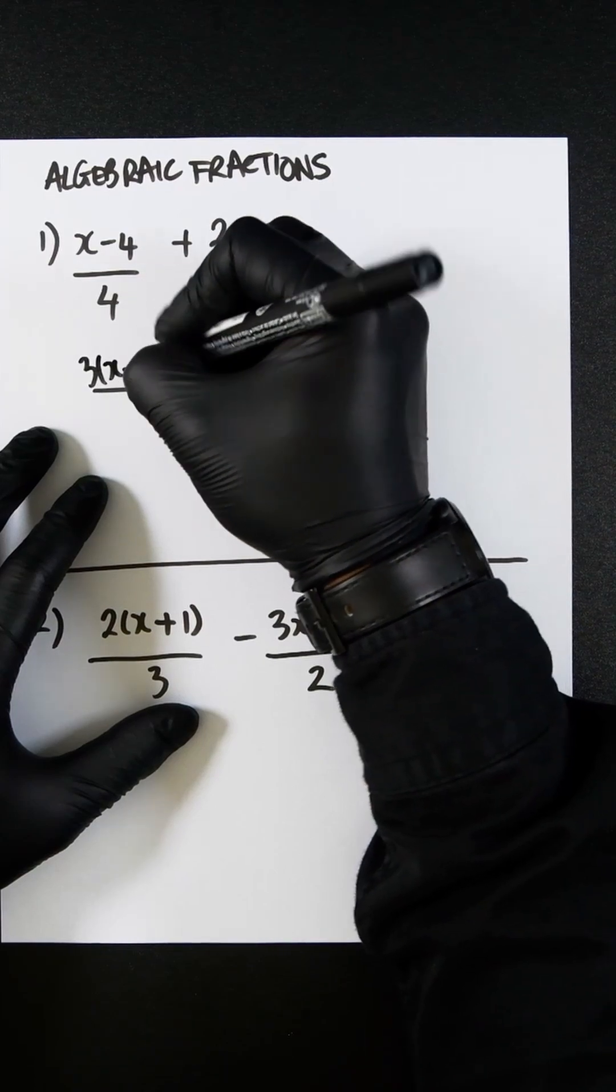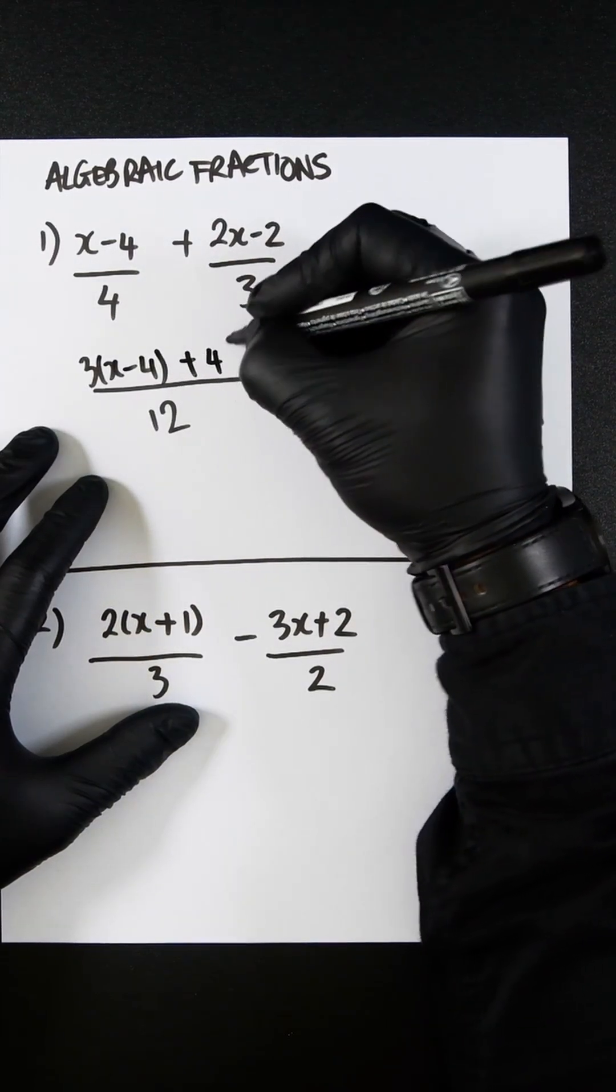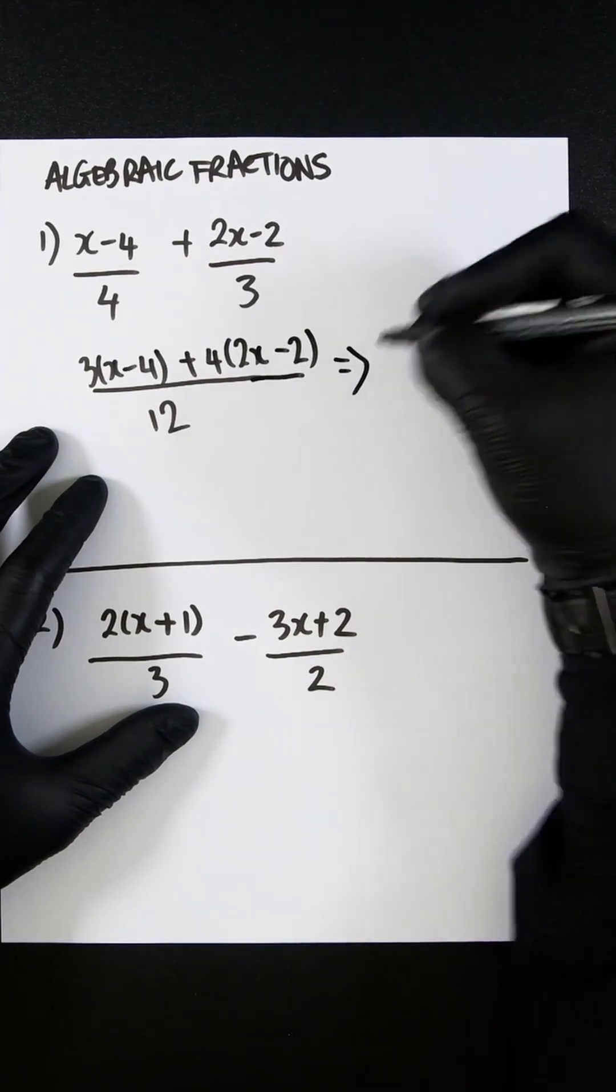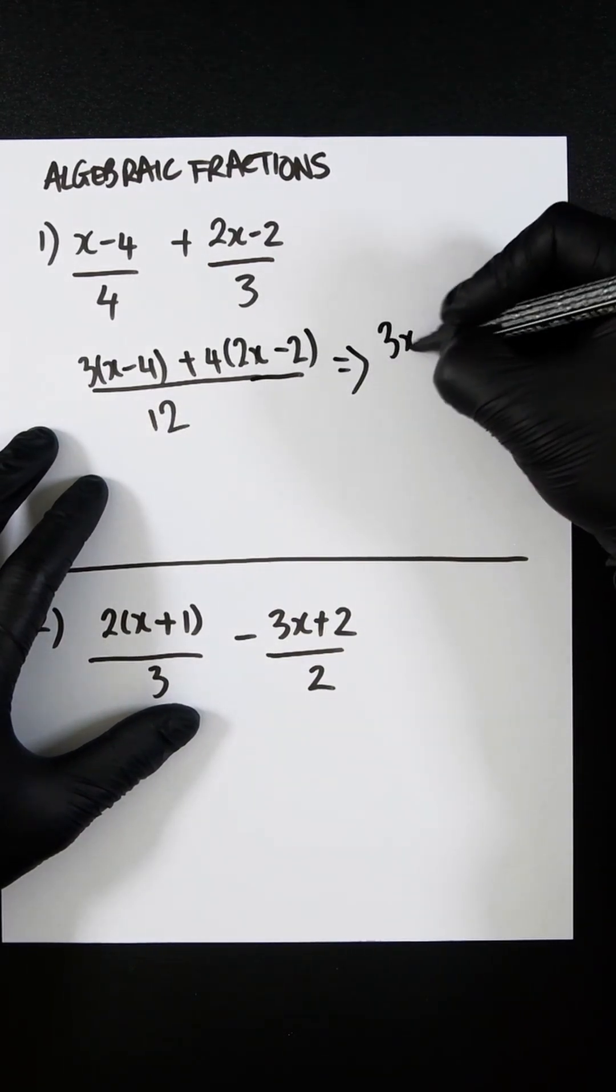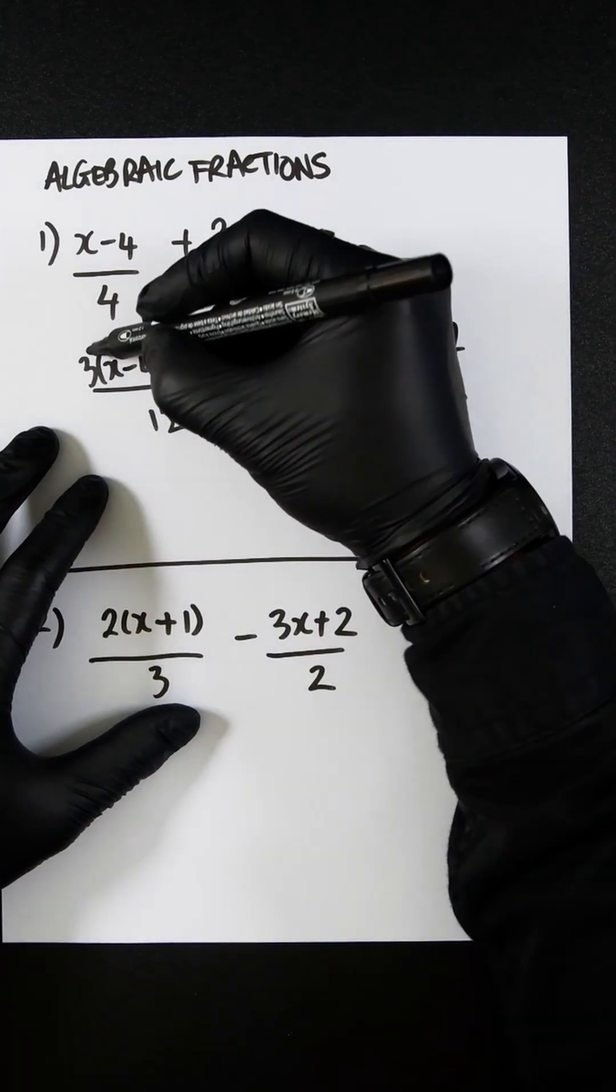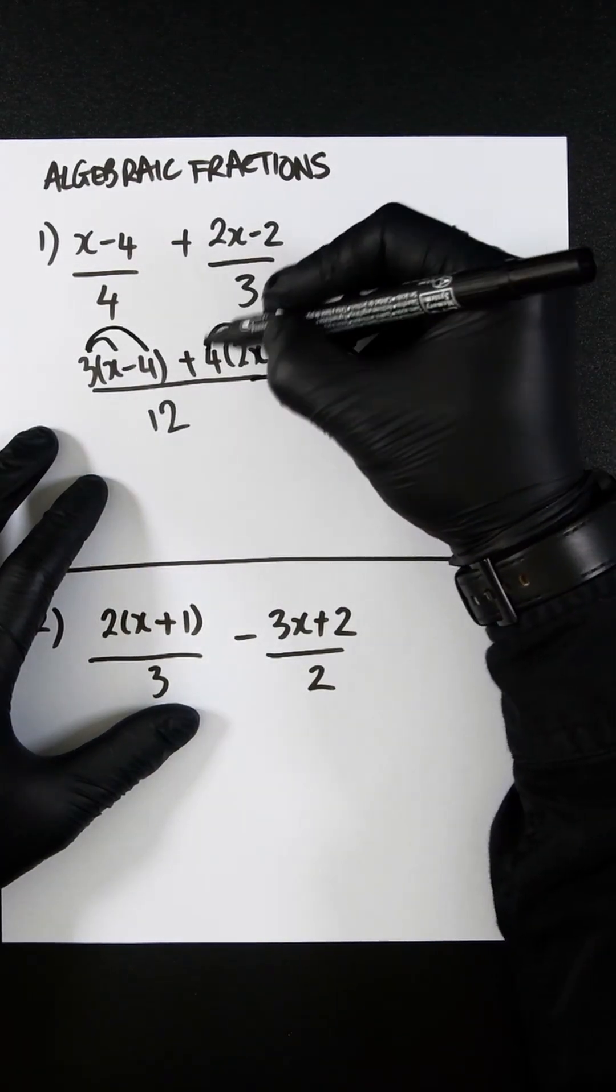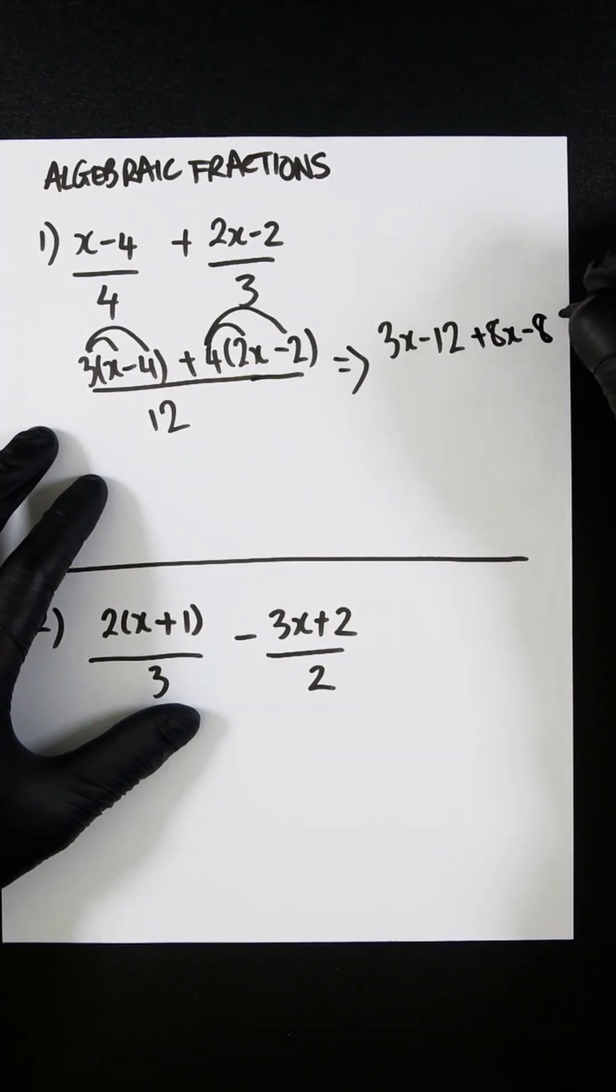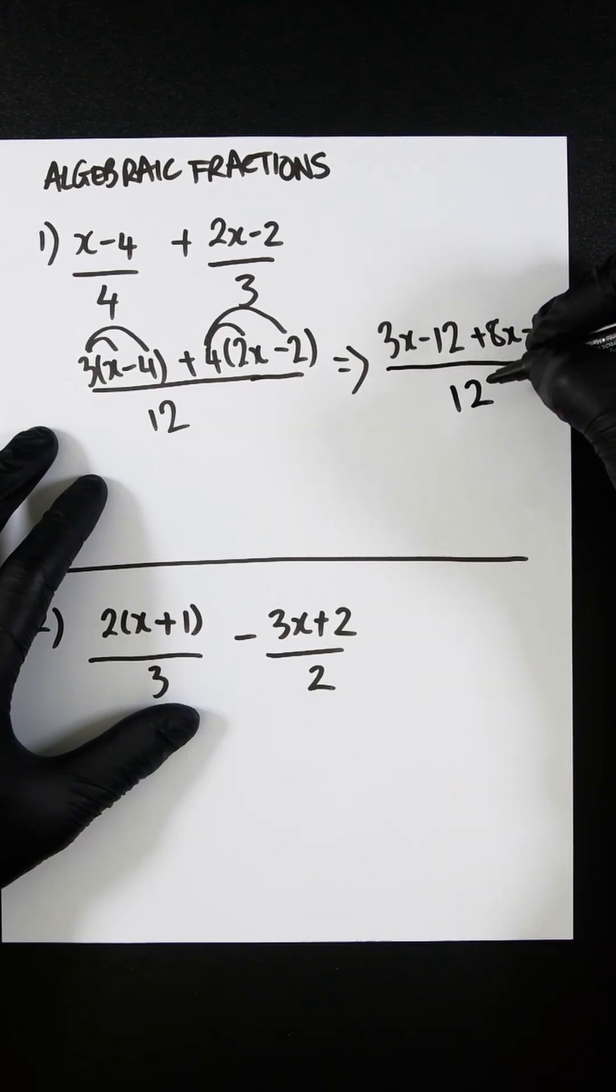It's going to be 3 times (x minus 4) plus 4 times (2x minus 2). We can now expand this. It's going to be 3x minus 12. So let's multiply that. And let's expand that. 4 and 2x, which is 8x, and 4 and minus 2, which is minus 8, all divided by 12.